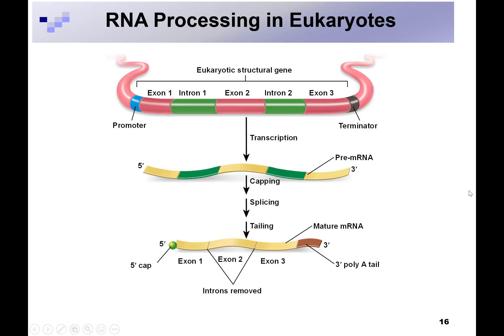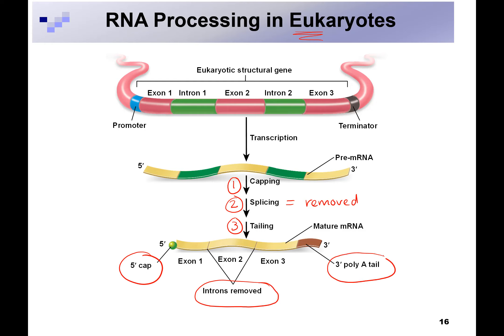Let's talk about RNA processing. You have a long region of RNA that's transcribed — this only happens in eukaryotes, not in prokaryotes. Three things happen: the mRNA gets a 5' cap, certain regions are removed by splicing, and it gets a poly-A tail on the 3' end. So we have a 5' cap, introns are removed, and a poly-A tail is put on the 3' end.